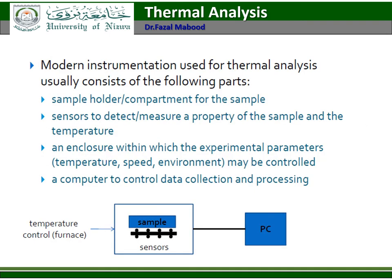Modern instrumentation used for thermal analysis usually consists of the following parts: a sample holder; a sensor to detect and measure a property of the sample and the temperature; an enclosure within which the experimental parameters — temperature, speed, environment — may be controlled; and a computer to control data collection and processing.